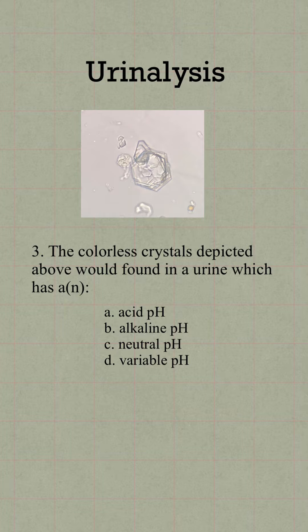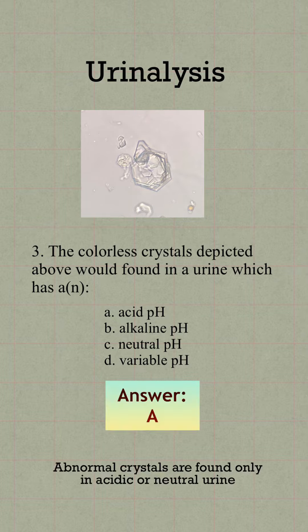Question number 3. This crystal would be found in what urine pH? The answer is A. Abnormal crystals are found only in acidic or neutral urine.